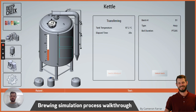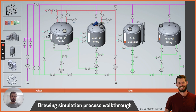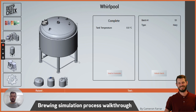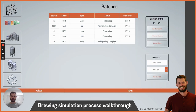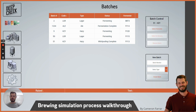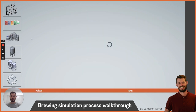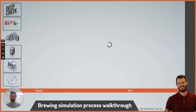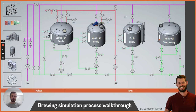Once the kettle's finished its boil it'll transfer to the whirlpool. On the whirlpool page it shows it filling and it's complete — so it happens very fast in the simulation, a lot slower in real life. At which point you'll connect a fermenter to the outlet. We'll select a fermenter for it from this point and it will be sent through the heat exchanger to the fermenter. And that's the basics of this brewing process.